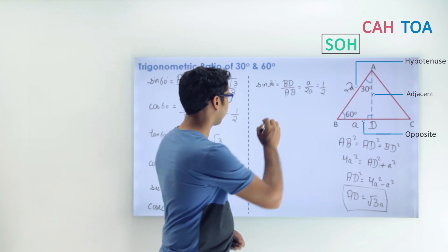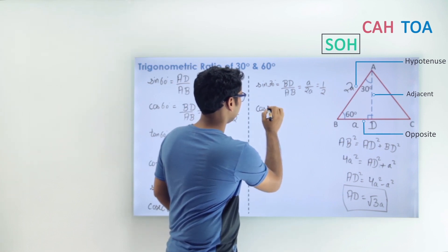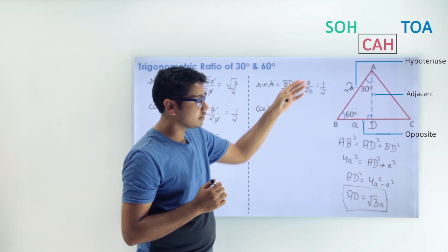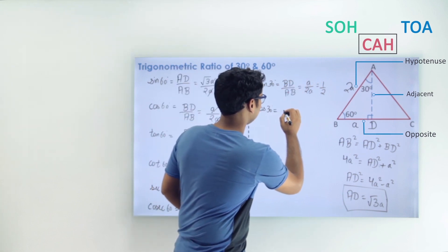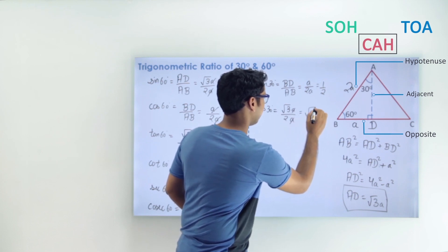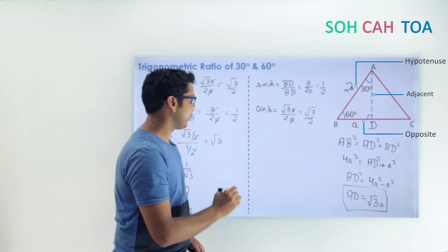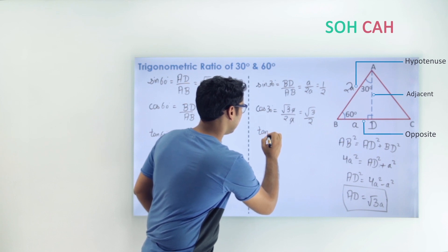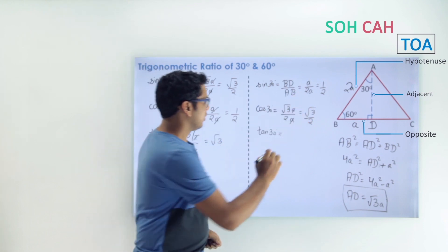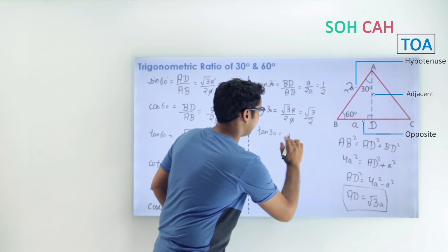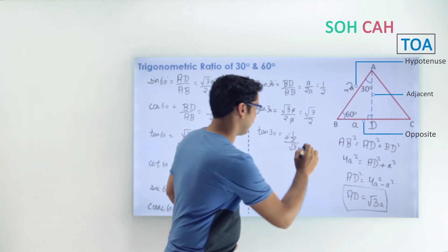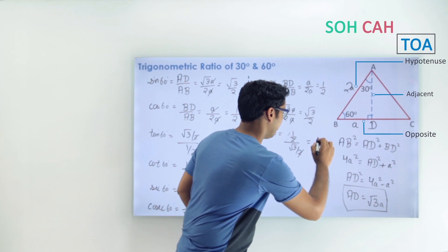cos 30° = adjacent/hypotenuse = AD/AB = √3A/2A = √3/2. For tan 30°, dividing sin 30° by cos 30°: (1/2) ÷ (√3/2) — the 2's cancel — giving tan 30° = 1/√3.